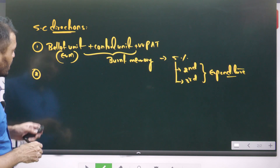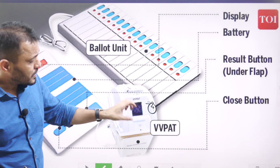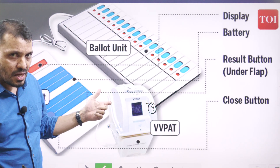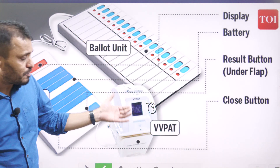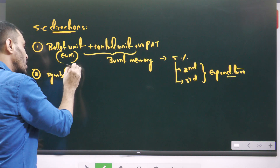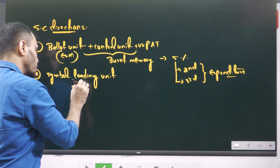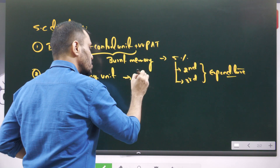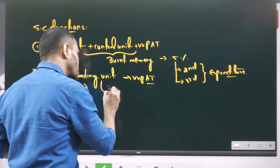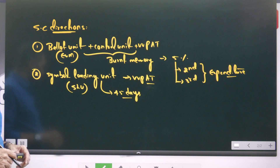The second direction concerns the Symbol Loading Unit (SLU), which is used to load the candidate name, symbol, and serial number onto the VVPAT display. The Supreme Court directed that Symbol Loading Units should be stored for 45 days in the strong room after the election.